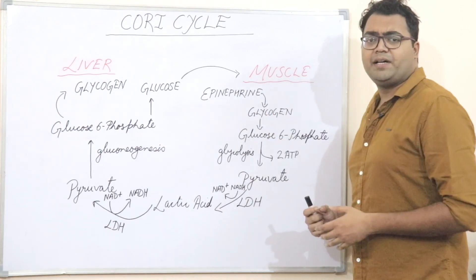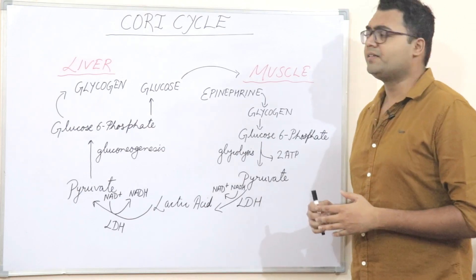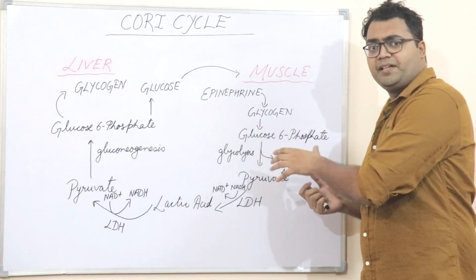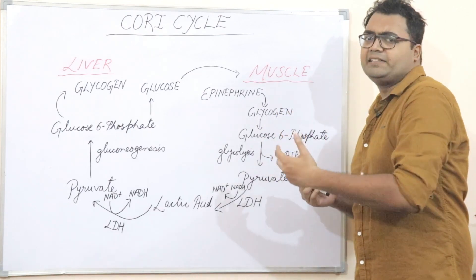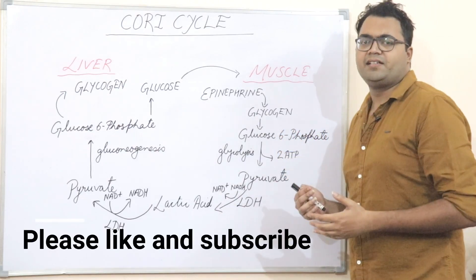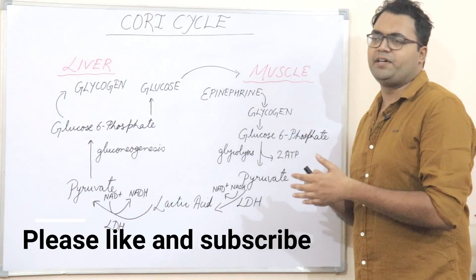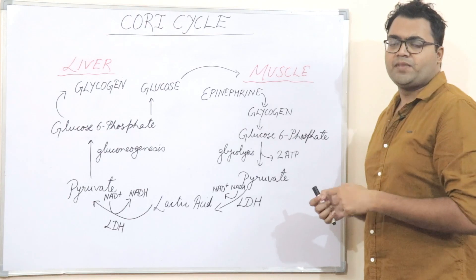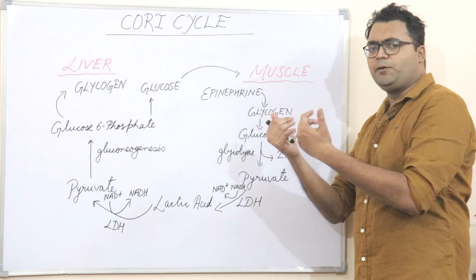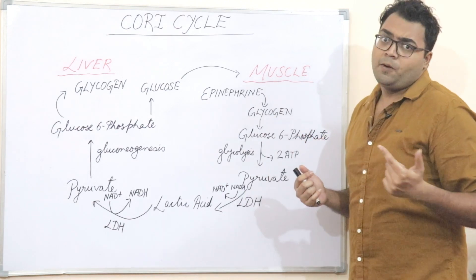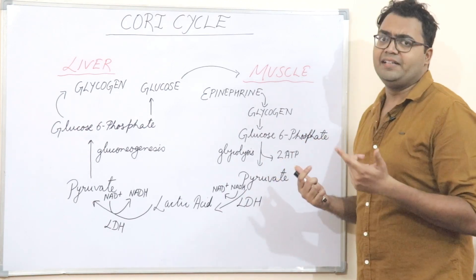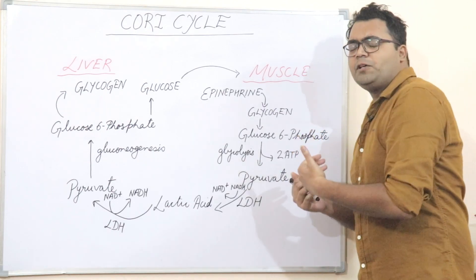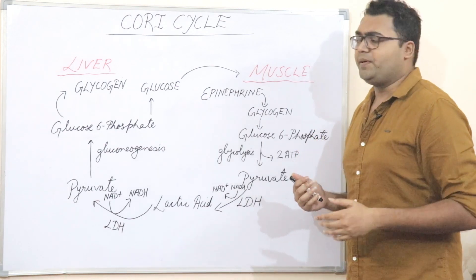The Cori Cycle was discovered by Gertie and Karl Cori. The Cori Cycle discusses the phenomenon where our muscles, when we do a lot of exercise — when we go for stringent muscle activity like gyming or running — what does the energy load on the muscle implicate on the body? How are the ATPs used by the muscle? How does the oxygen debt in the muscle increase, and how does the muscle make use of the enhanced need for ATP?